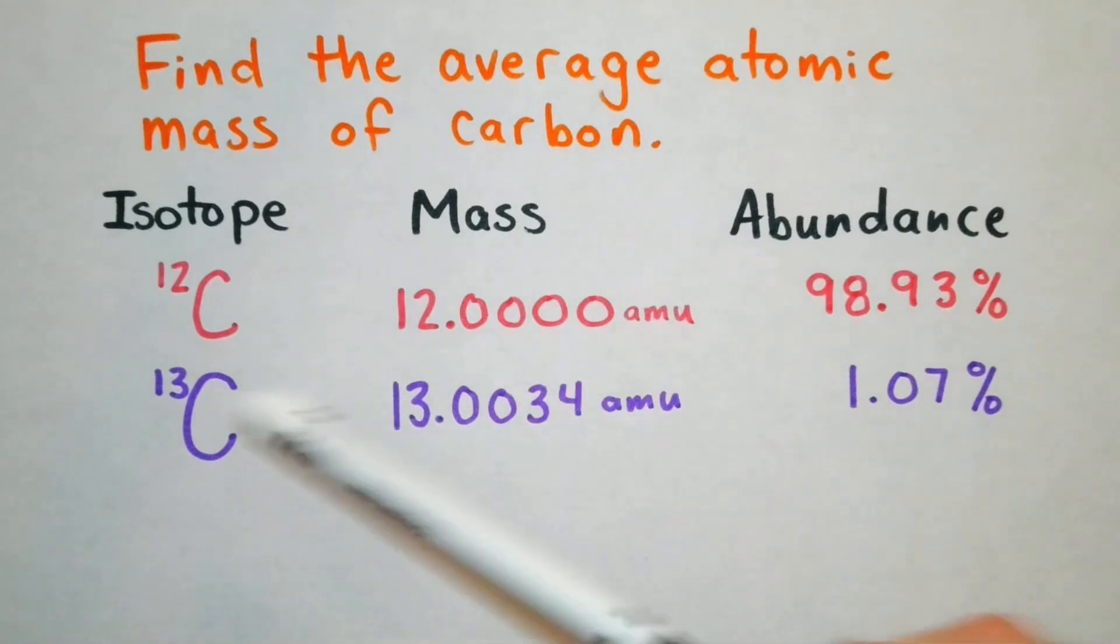So for carbon-12, we have an atomic mass unit of 12.000 and its abundance is 98.93%. We will convert that into decimal form.